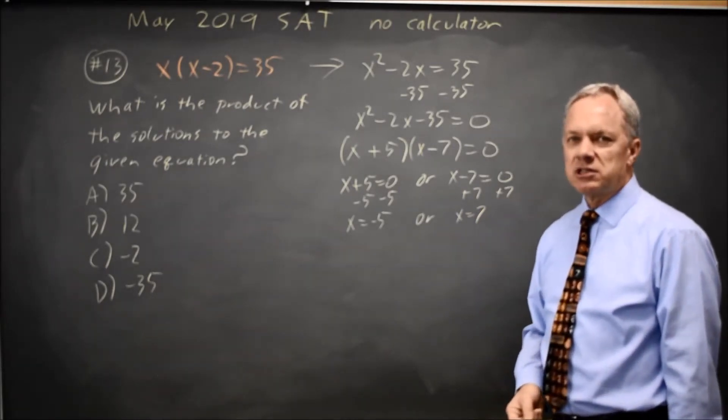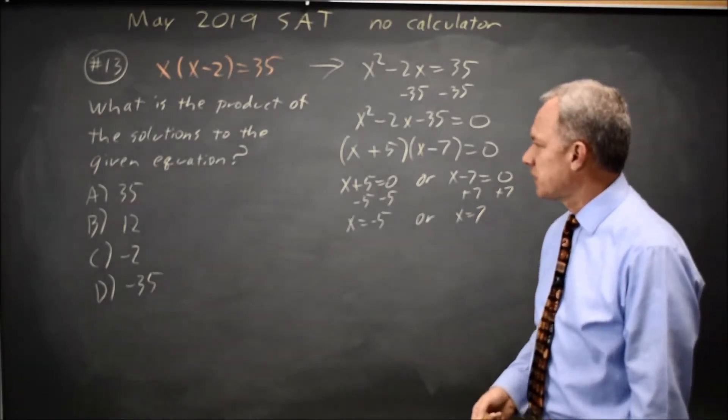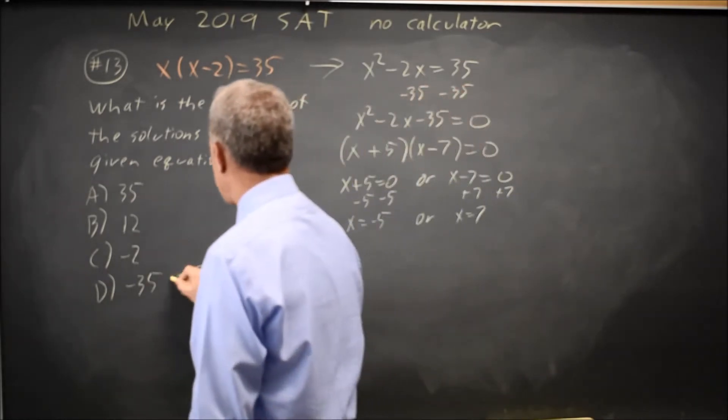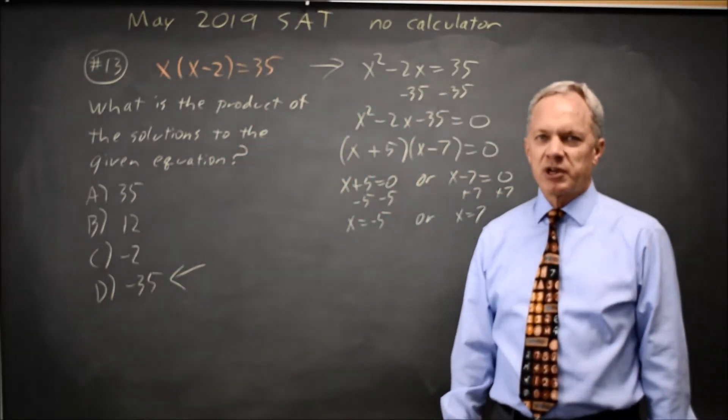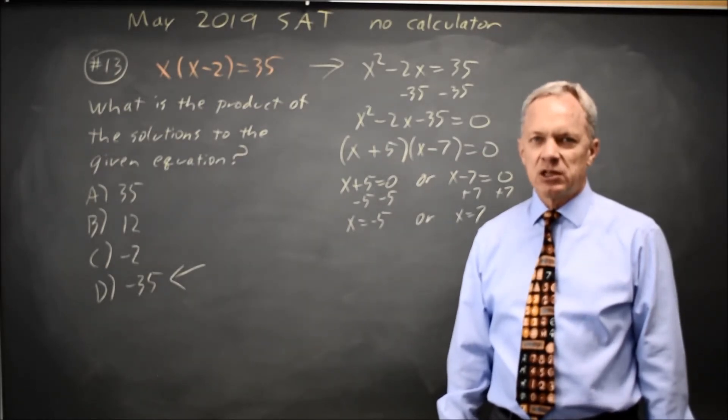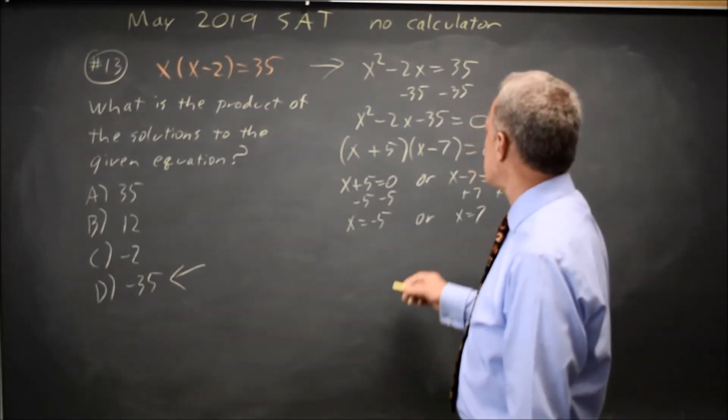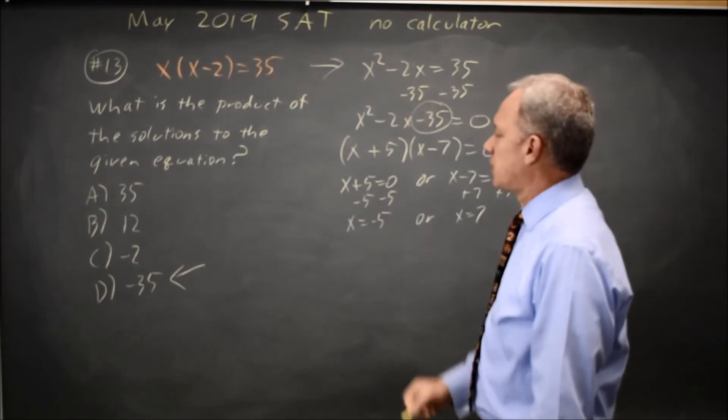So the product of the solutions is 7 times negative 5 equals negative 35, and at this point, we may recall that if you have a quadratic with a leading coefficient of 1, the product of the solutions is the constant term negative 35.